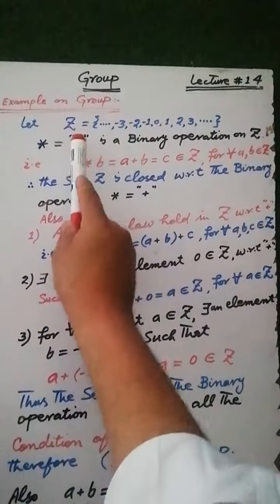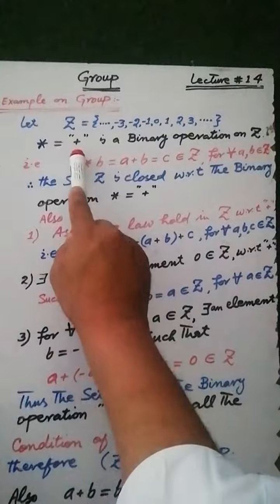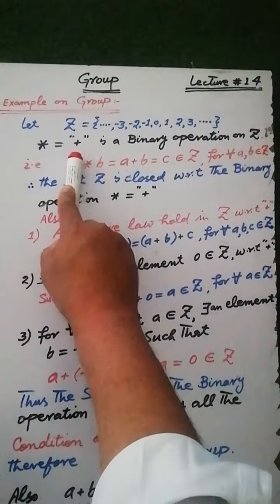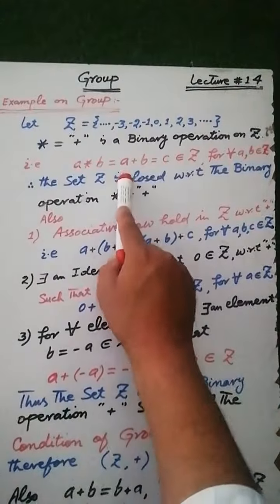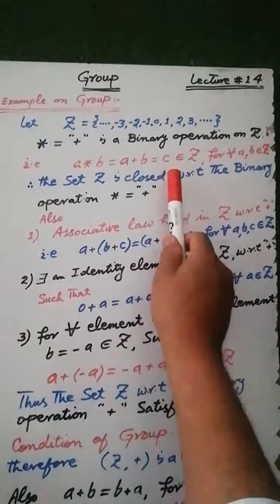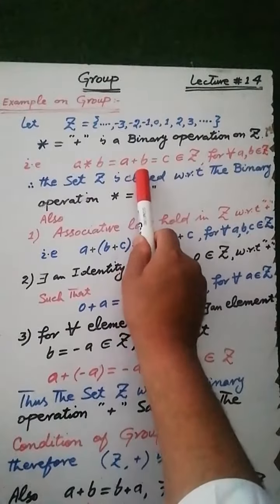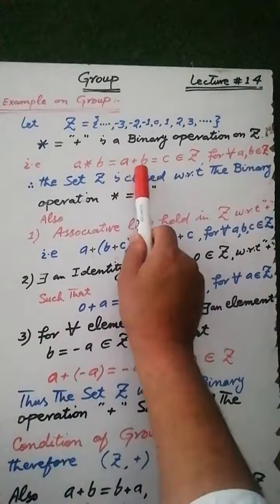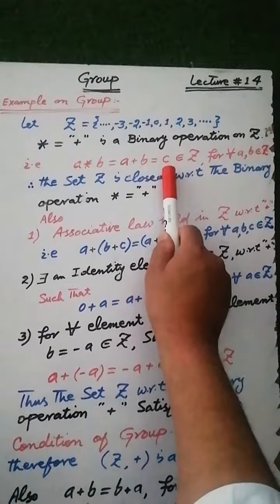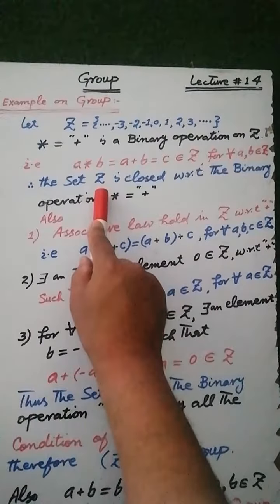Example: let Z be the set of all integers, and we have to check that ordinary addition is a binary operation on Z. Since the sum of any two integers a and b must be an integer — that is, if a and b are any two integers, then the result of their sum must be an integer — therefore the set Z of all integers is closed with respect to the binary operation addition.